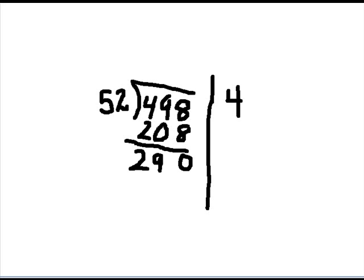I know that 4 times 52 is 208, so I can use 4 again. So I'm going to put another 4 over here right underneath that one. I'm going to put my 208 because I know 4 times 52 is 208. Now I'm going to subtract that.